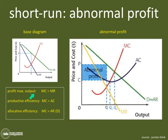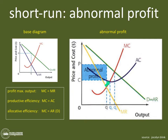That is the profit-maximizing level of output where MC equals MR. Now, productive efficiency — productive efficiency happens where marginal cost equals average cost. At that point, where the marginal cost curve meets average cost, is the lowest possible cost per unit the firm can operate at. That's Q1. Productive efficiency for a firm is always where marginal cost equals average cost, which always happens at the lowest point of the average cost curve. That is the quantity where the firm produces most efficiently at the lowest average cost per unit.